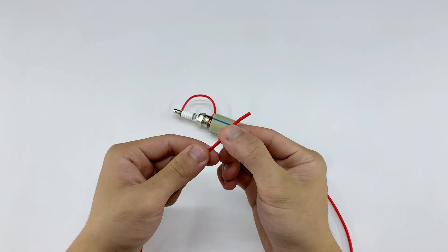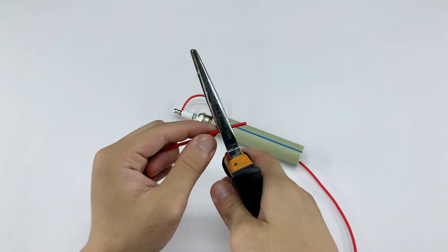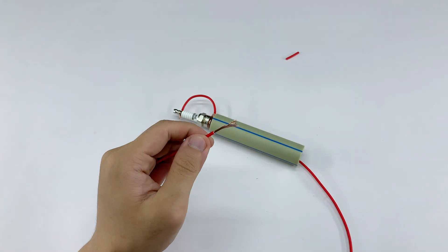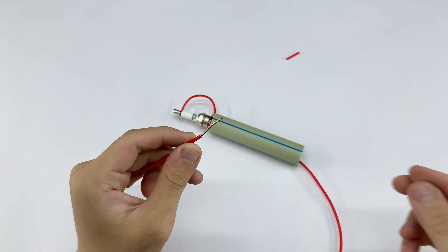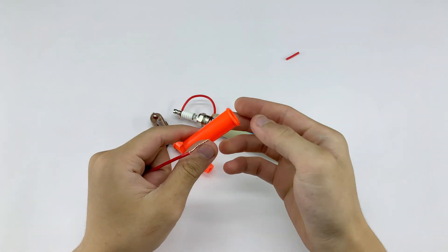For the other end of this wire, we'll attach an alligator clip. This part will connect to the positive terminal of the power source. Make sure it's clipped securely so the current flows without any loose contacts or short circuits.